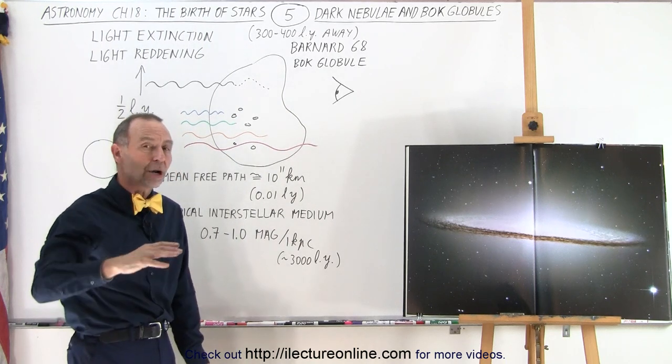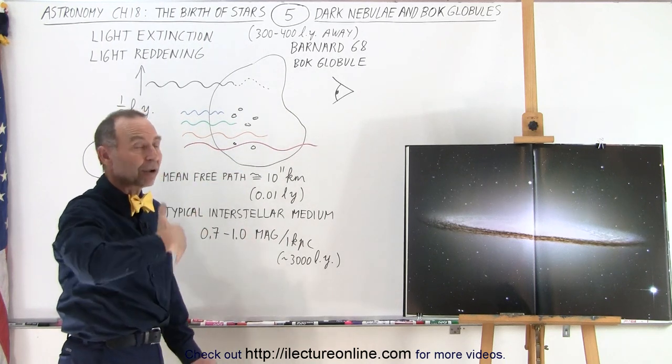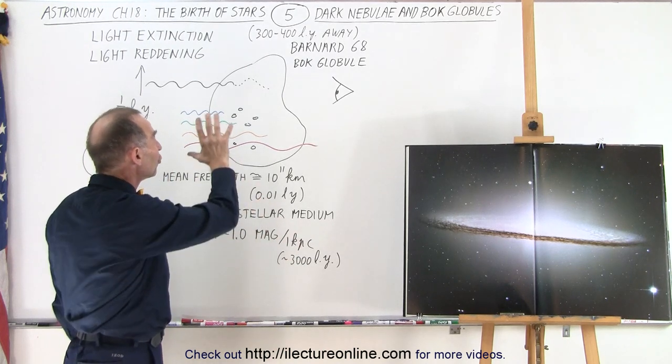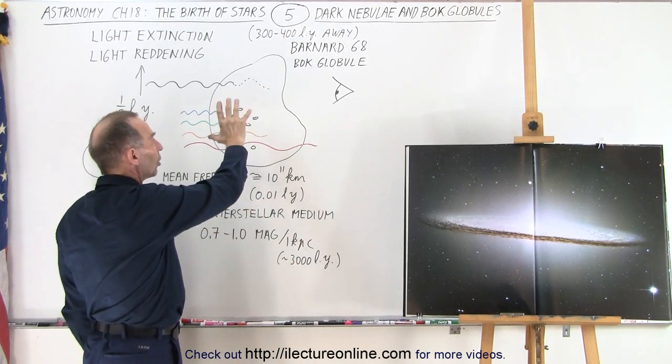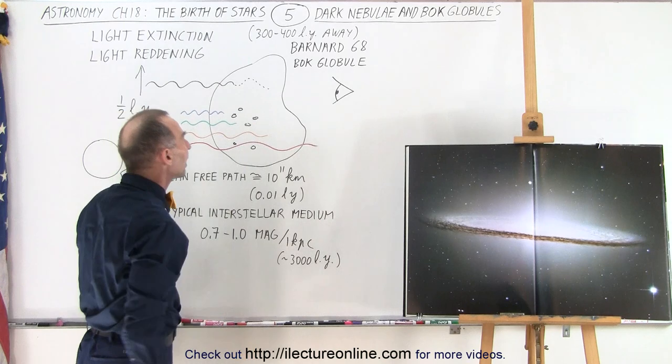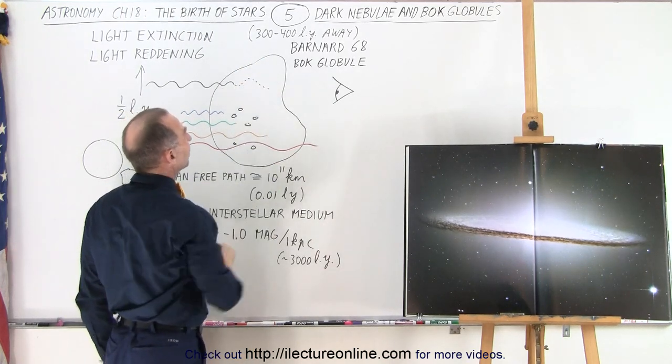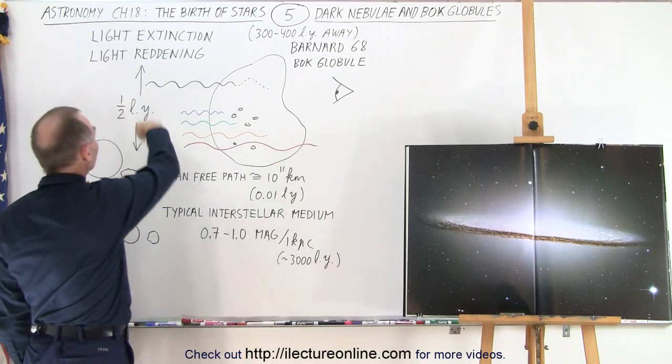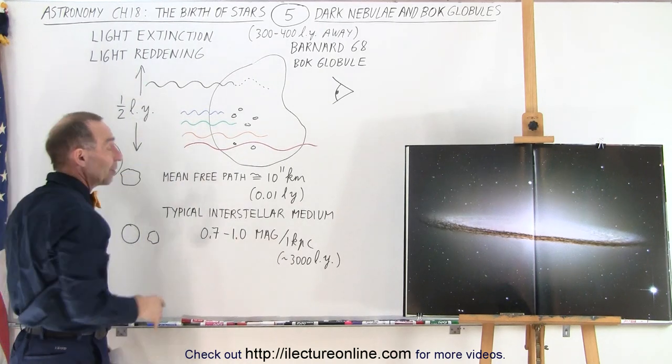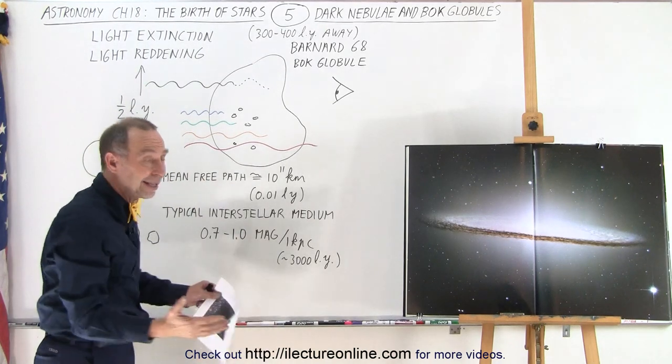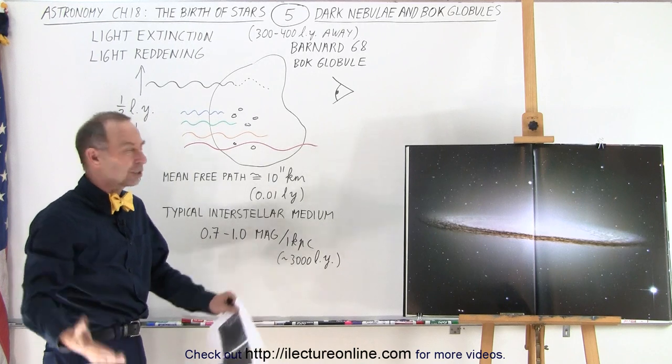About a hundred years ago, Barnard did a survey of the sky and tried to map and find as many of these dark globules, or Bok globules, in our galaxy. This particular one is about three to four hundred light years away, and it's about a half a light year across, which is still plenty big since the light year is about 10 trillion kilometers.